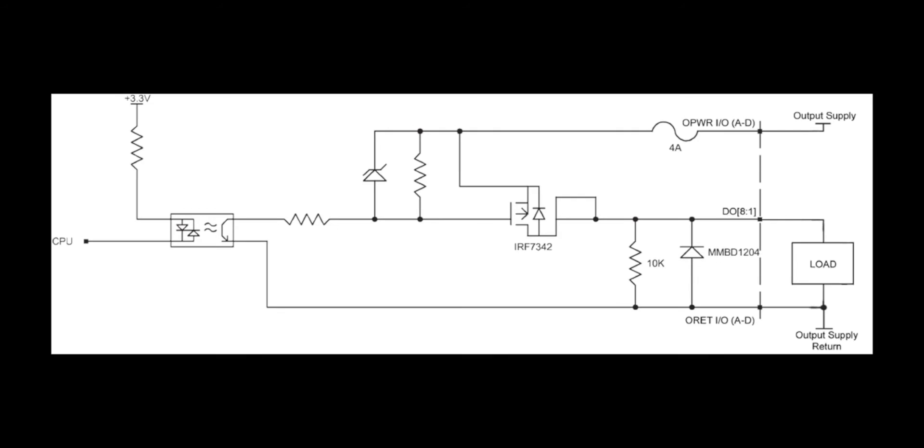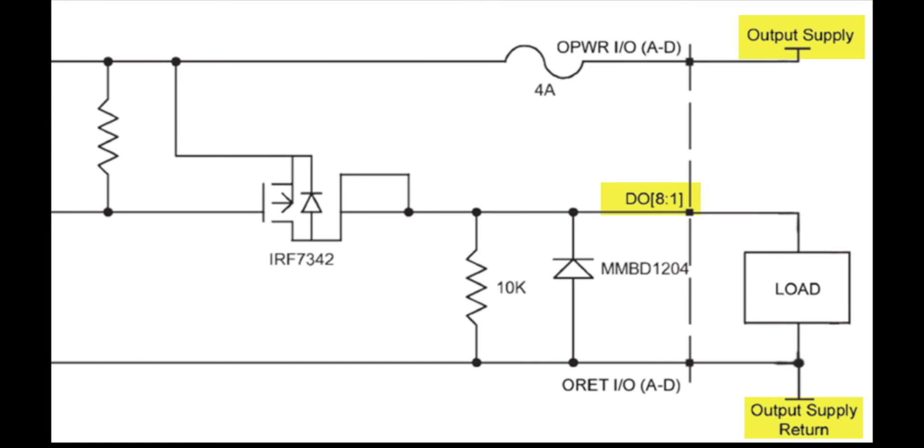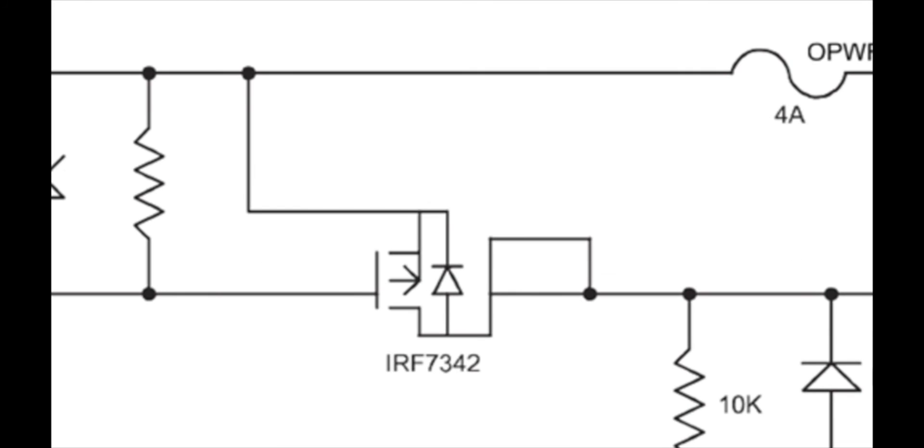The 500mA option also has its own unique properties. Although much more complicated internally, the sinking and sourcing options are wired in the same way as the sinking and sourcing options previously shown. One of the differences is that the switch type is an opto-isolator and a MOSFET. When off, the MOSFET acts as an open circuit.